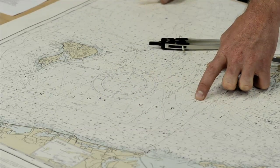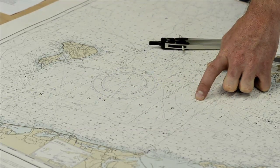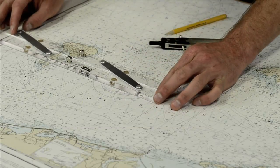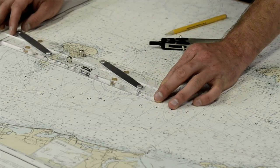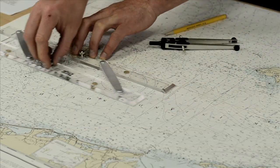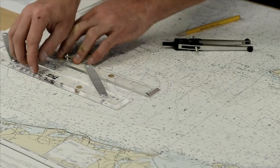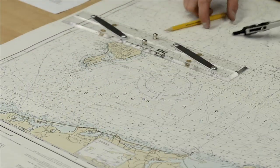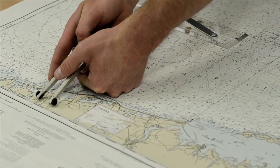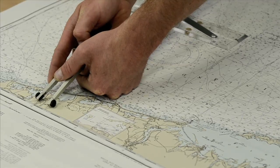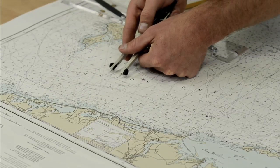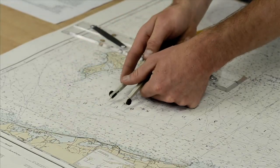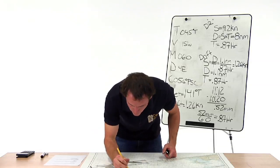Now let's find our ending point. Our ending point is at 41°59' north, 71°41.7' west. So 41°59' north — we line up east to west and walk this up to 41°55.9'. We make a mark. Now we get our longitude: 71°41.7'. There's our ending point.